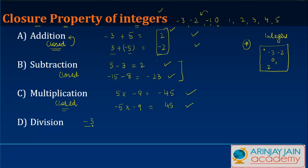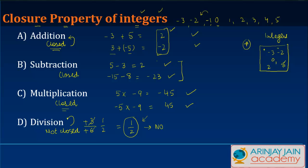How about division? Let's say I divide −3 by −6. The answer I get is 1/2. But is 1/2 an integer? Does it lie within this box? The answer is no, because 1/2 is not an integer — it's a fraction, which is not part of the set lying within this box. So we say that the integers are not closed under division.